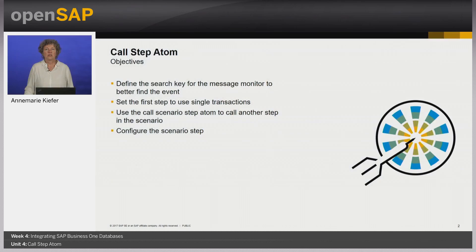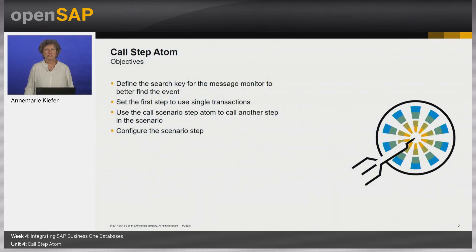In this unit we are going to define the search key for the message monitor to better find the event, set the first step to use a single transaction, and use the call step atom to call another step in the scenario.